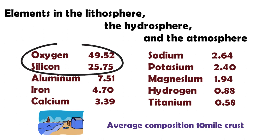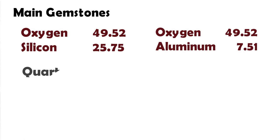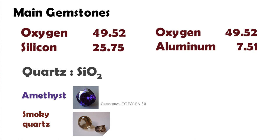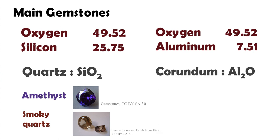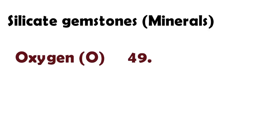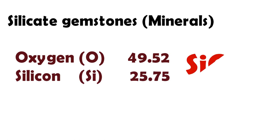Oxygen is the most abundant element, and then silicon. As main gemstones, you can see quartz and corundum. Corundum is a chemical compound of aluminum and oxygen with the chemical formula Al₂O₃. Quartz consists of oxygen and silicon. They are amethyst, smoky quartz, ruby, and blue sapphire. Therefore, silicate gemstones are composed of oxygen, the most abundant element, and silicon.